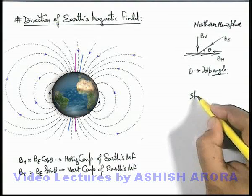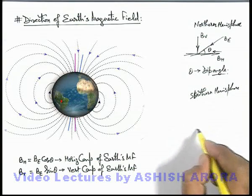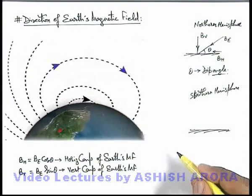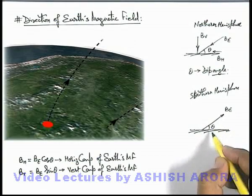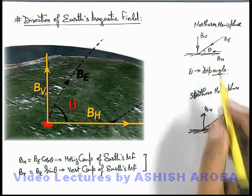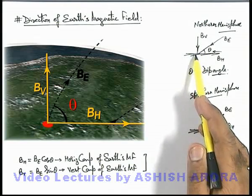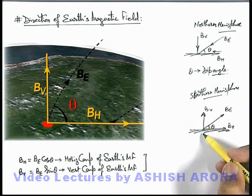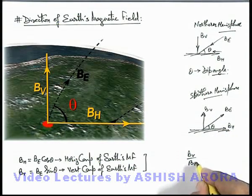Similarly, if we draw a diagram for the southern hemisphere of Earth, we can see that in the southern hemisphere, at any point the magnetic field is going away from Earth's surface — B-E is outward. At this point there will again be a horizontal component and a vertical component with the same values, but the difference is that in the northern hemisphere the vertical component of the magnetic field is vertically downward, while in the southern hemisphere it is vertically upward.